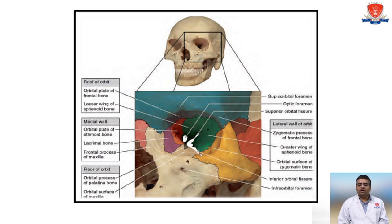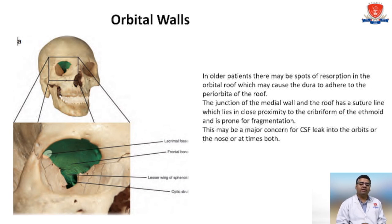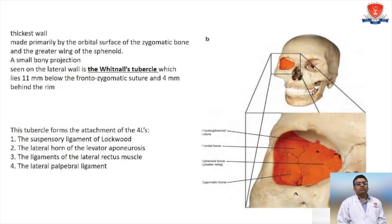Orbital wall considerations: in older patients, there may be spots of resorption in the orbital roof which may cause the dura to adhere to the periorbita of the roof. The junction of the medial wall and the roof has a suture line which lies in close proximity to the cribriform plate of the ethmoid. These may be a major concern for CSF leak into the orbit in a NOE fracture. The thickest wall is the lateral wall, formed primarily by the orbital surface of the zygomatic bone and the greater wing of the sphenoid.